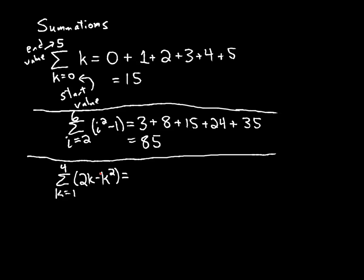So what would this look like? I'm not actually going to evaluate anything, I'm just going to plug the values in. So I have 2 times 1 minus 1 squared, that's my first term. And my second term will be 2 times 2 minus 2 squared. My third term will be 2 times 3 minus 3 squared. And my fourth term is 2 times 4 minus 4 squared.